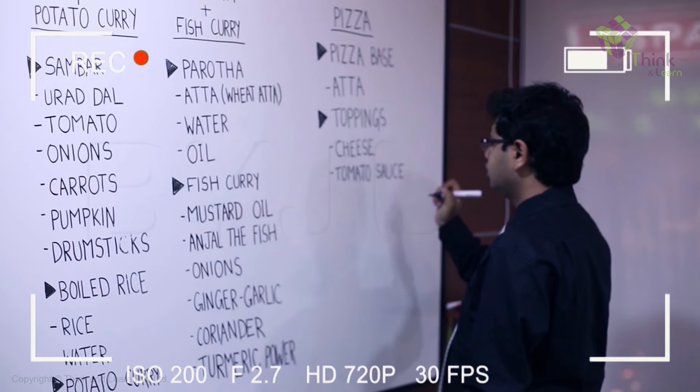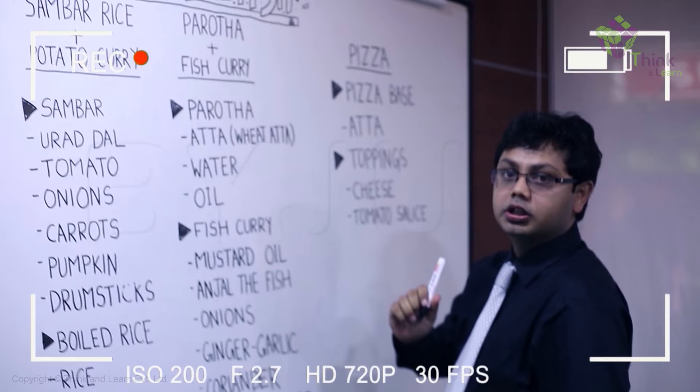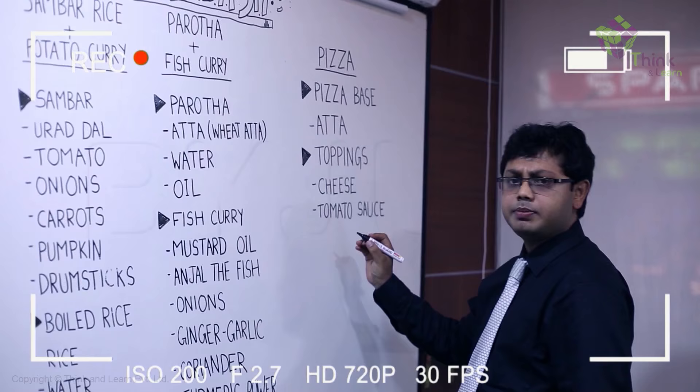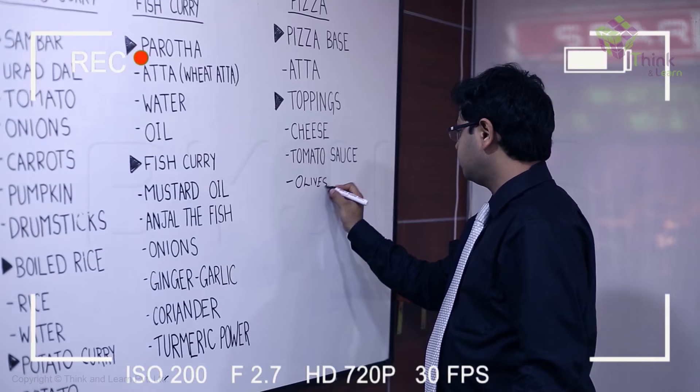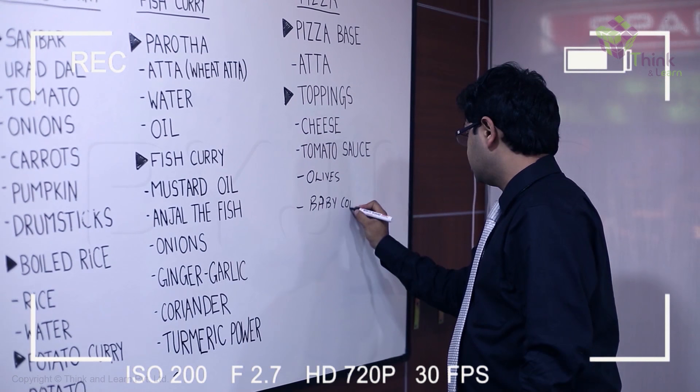I'm making a list of ingredients for the food for my big birthday bash. For the pizza toppings we have cheese, tomato sauce, and then we add a few vegetables — I will add olives, baby corn, and onions.